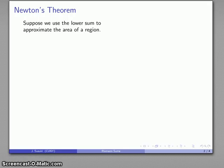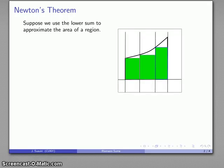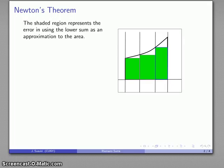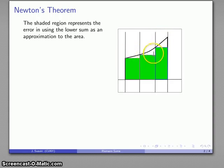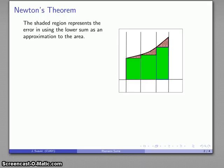Suppose I want to use the lower sum to approximate the area of some region. I'll take some region, partition it, draw the largest rectangles that will fit into those regions, and then I have this error between the area of the rectangles and the actual area of the region. This shaded region corresponds to the error in using the lower sum as an approximation to the area of the entire region.